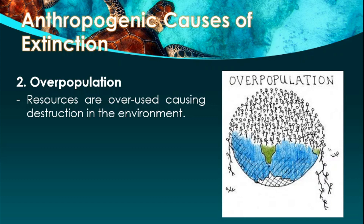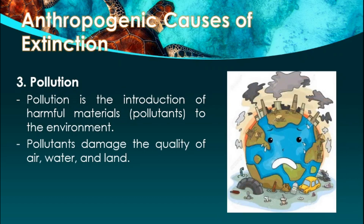The next anthropogenic cause is pollution — the introduction of harmful materials called pollutants into the environment. Pollutants damage the quality of air, water, and land. We have three types of pollution: air pollution, water pollution, and land pollution. These pollutants destroy the quality of the environment, making living conditions for different species hard and impossible to survive.